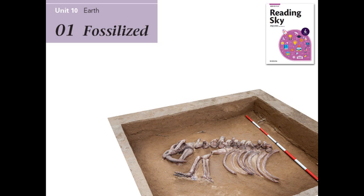Fossils are the remains or imprints of dead plants and animals. Most living things decay and disappear after they die. Fortunately, however, some leave behind fossils for us to study. There are three main types of fossils: imprints, molds, and casts. Each of these fossils is created differently.